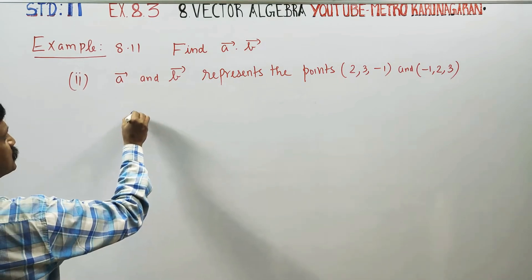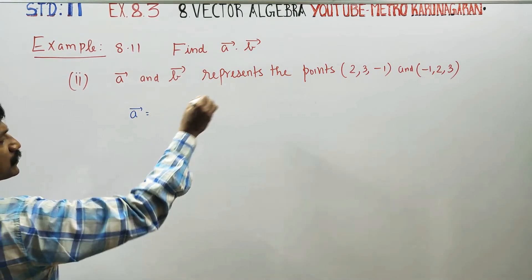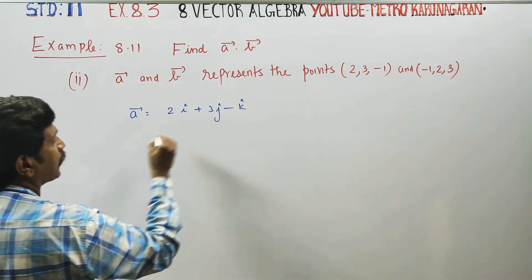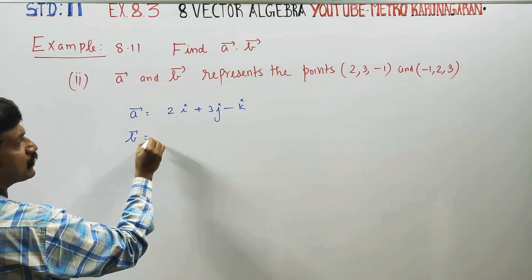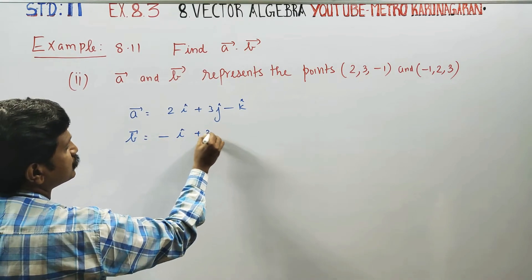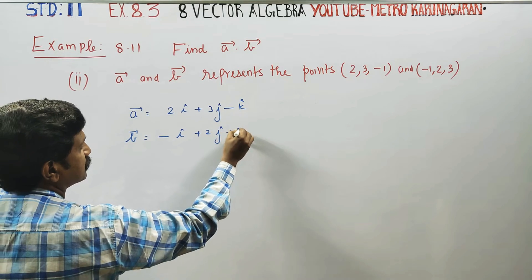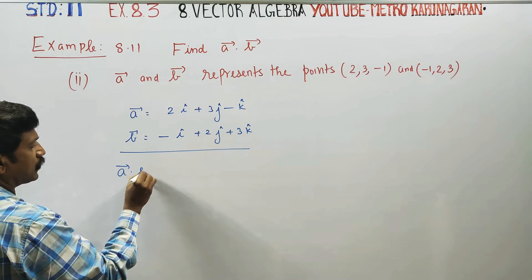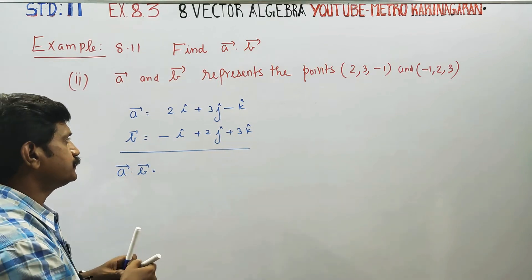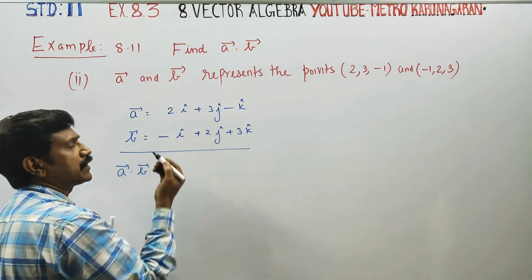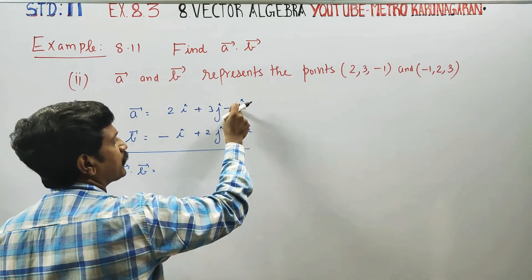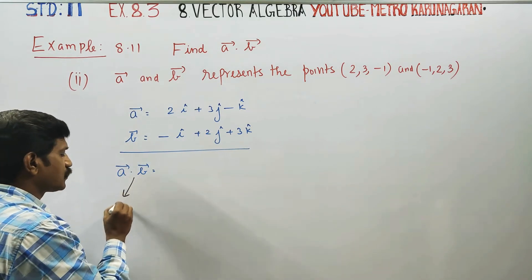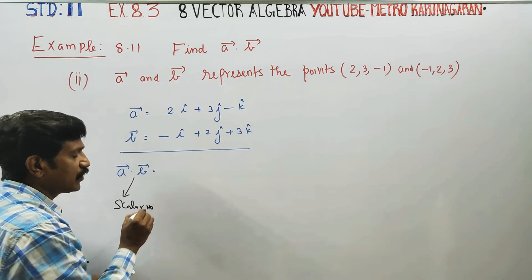A vector, B vector — just add I, J, K: 2I plus 3J minus K. B vector is equal to minus I plus 2J plus 3K. The dot product is also called a scalar product, and the answer is a scalar number.